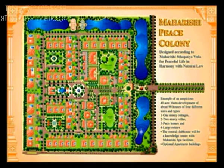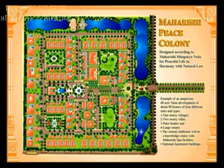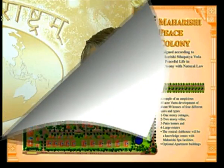This 40-acre or 16-hectare example has about 90 houses of four different sizes and types: one-story cottages, two-story villas, patio homes, and large mansions. It also features beautiful gardens and playgrounds, a central clubhouse with Maharishi Spa, and optional apartment buildings.